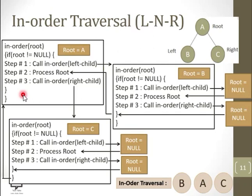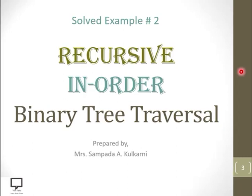The recursive function call helps us move back to the previous level. This is important because the tree data structure has links only from parent to child node — there are no links from child to parent node. So to go back from child to parent, the recursive function call helps us move from the lower level to the upper level.